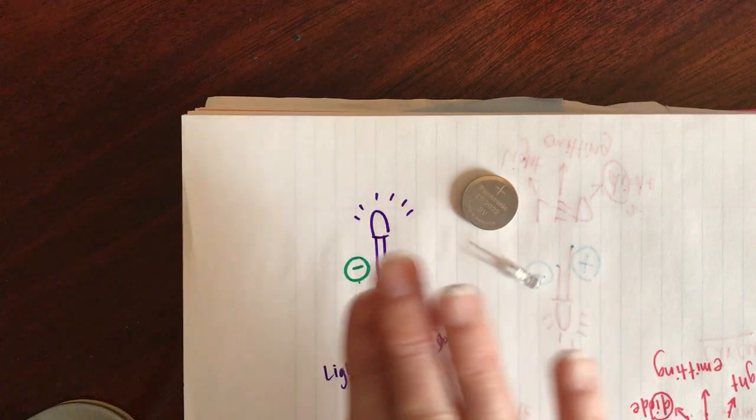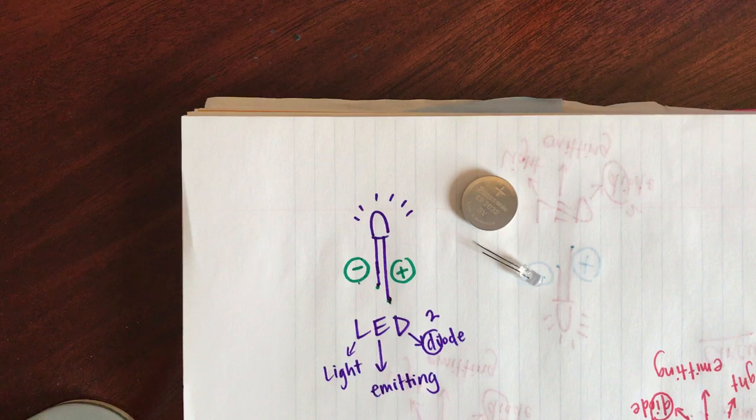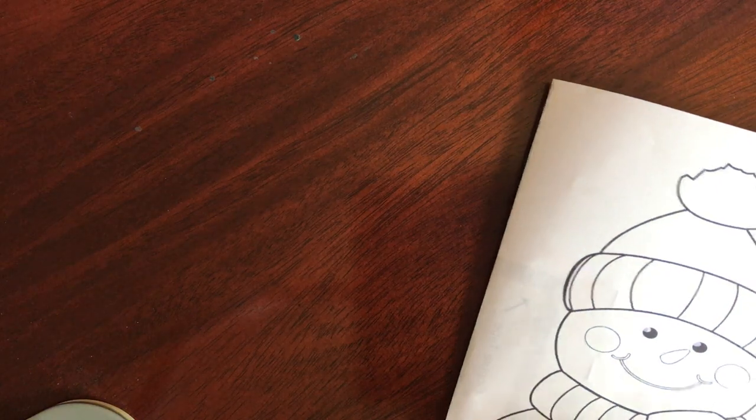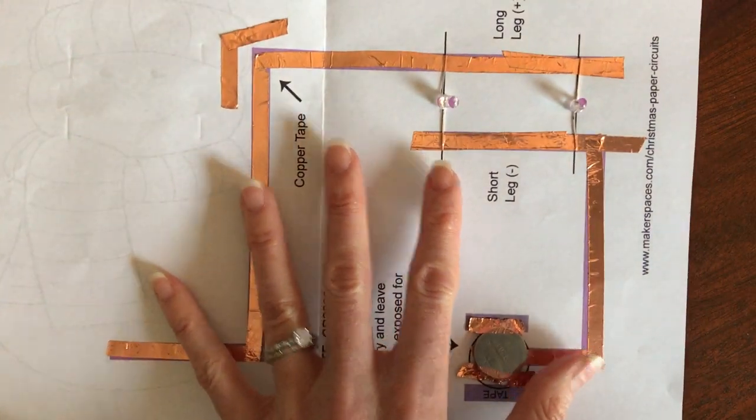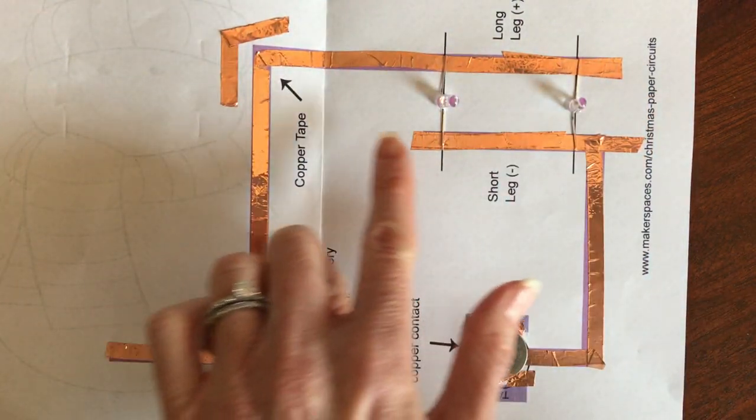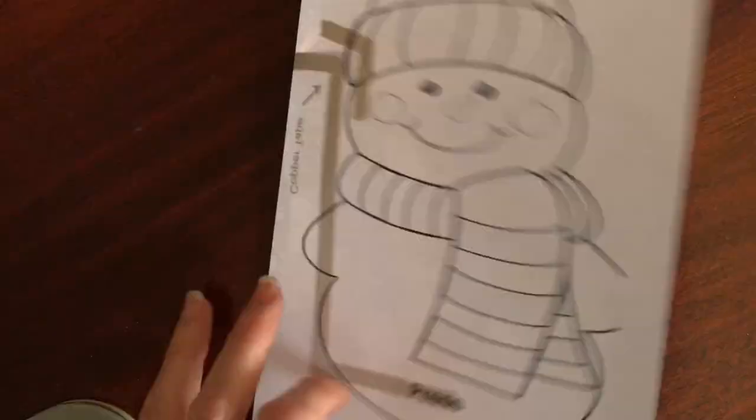After we do that test, you can go ahead and set these aside because you're not going to need them for just a minute. We are going to look at the inside of our card and how we're going to put that together. So inside my card, if I open this up, you'll see I have this whole path of copper tape running along here and another path running along here. And that's going to be the first step in our project.